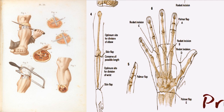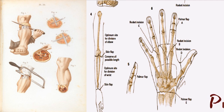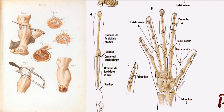Racket incisions may also be used for amputations of digits where all possible length must be preserved. This is especially true for injuries of the thumb (Figure 6). Racket incisions with removal of the head of the metacarpal or metatarsal give a good appearance to the extremity but considerably diminish the breadth of the foot or palm.